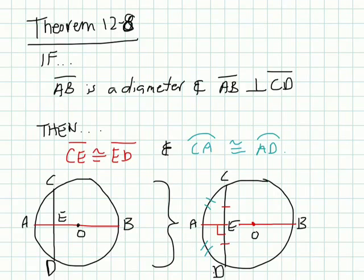Theorem 12.8. This says that if segment AB is a diameter, and AB is perpendicular to another chord CD, then CE is congruent to ED, and arc CE is congruent to arc AD. So if AB is a diameter, you can see this passes through the origin, this is the diameter of a circle. So if a chord comes in and it's perpendicular, meaning it forms a right angle here...